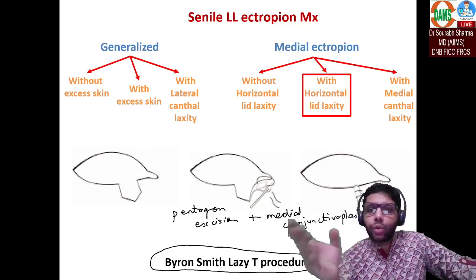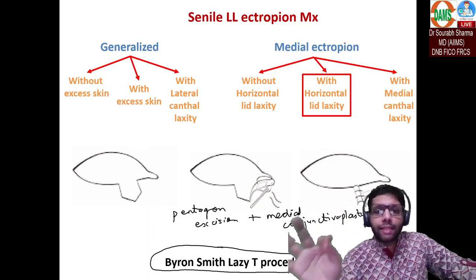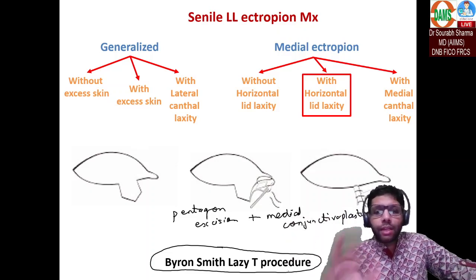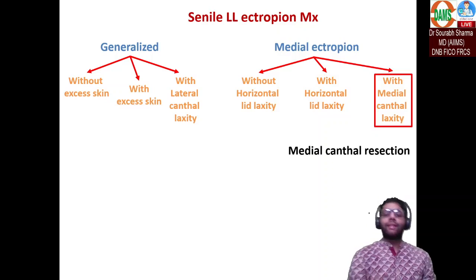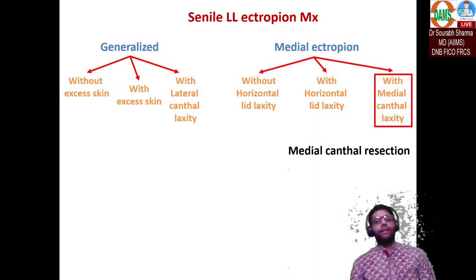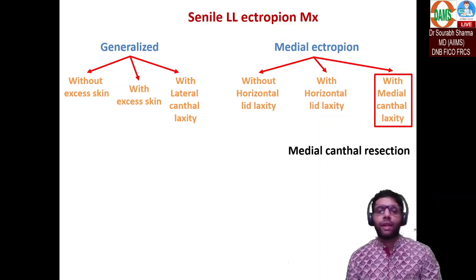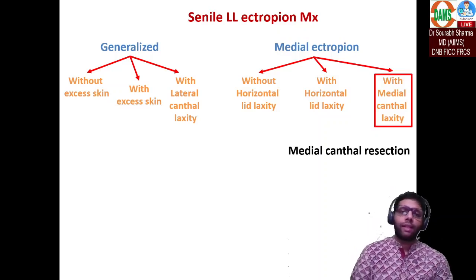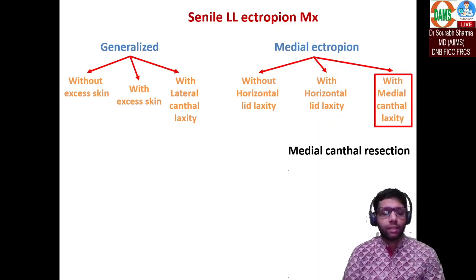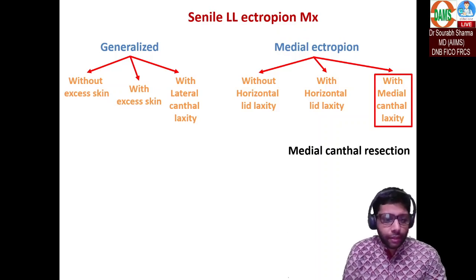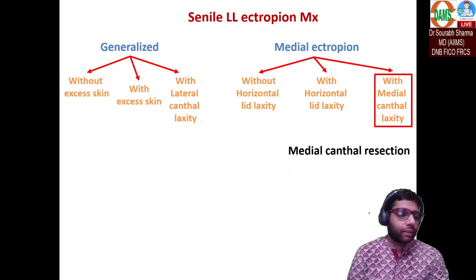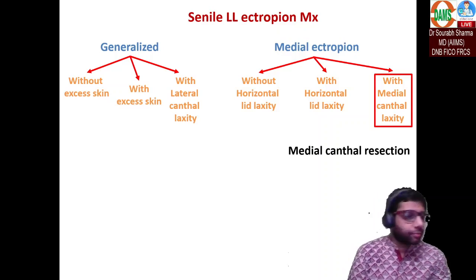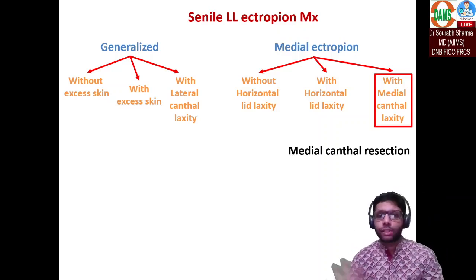If there is medial canthal laxity, a medial canthal resection is done to tighten the medial canthus — similar to how the lateral tarsal strip procedure addresses lateral canthal laxity. That is more than enough for lower lid ectropion.